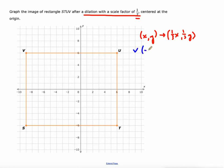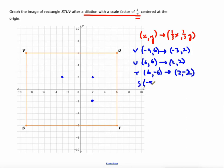So V, which is currently at negative 9, positive 6, is going to become 1/3 of negative 9, which is negative 3, and 1/3 of 6, which is 2. U is at 6, 6, so you take a third of each one of those values, and it would be 2, 2. T is at 6, negative 6, take a third of each one of those, that would be 2, negative 2. And S, which is currently at negative 9, negative 6, when you transform that by the dilation scale factor of 1/3, it's going to end up at negative 3, negative 2.